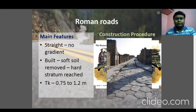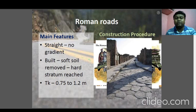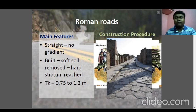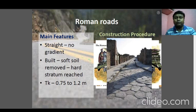Regarding Roman roads: they are straight with no gradient, built by removing soft soil down to a hard stratum, and their thickness is about 0.75 to 1.2 meters. This is the old-age type of Roman road construction, which you can observe in various movies and videos.